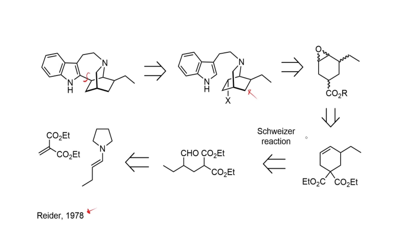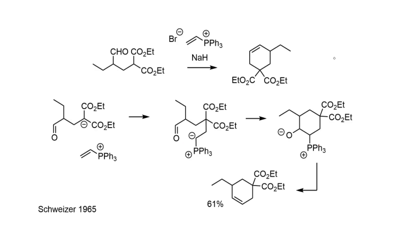They made the epoxide from a cyclohexene with the ester groups on it, and this is an interesting cyclization reaction. The cyclohexene ring was produced by the Schweitzer reaction, which involves excising a two-carbon fragment: this carbon is derived from the aldehyde group, and the disconnection goes back to a branched aldehyde diester. This molecule was made from the condensation between the pyrrolidine enamine of butanal and a very reactive malonate-derived Michael acceptor. It's worth spending some time on the Schweitzer reaction.